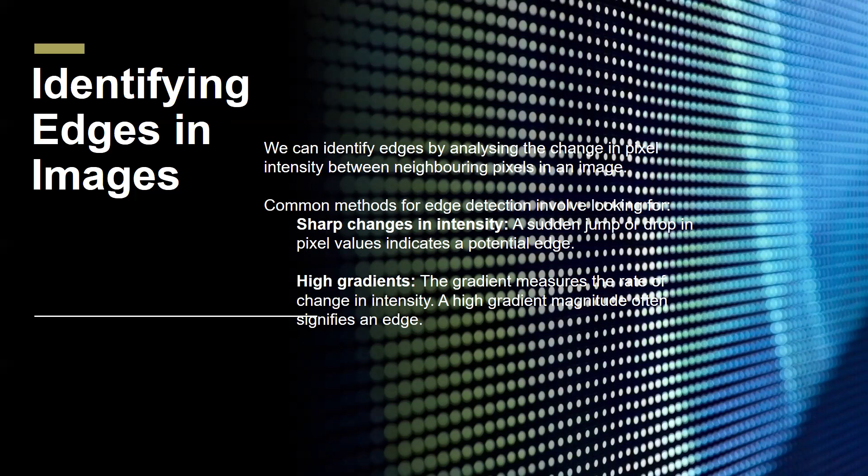Locations with high gradients often correspond to edges, as they significantly intensify variations across neighboring pixels. The common methods we use to detect edges involve using sharp changes in intensity — a sudden jump or drop in pixel values indicates a potential edge. High gradient magnitude often signifies an edge, as the gradient measures the rate of change in intensity.